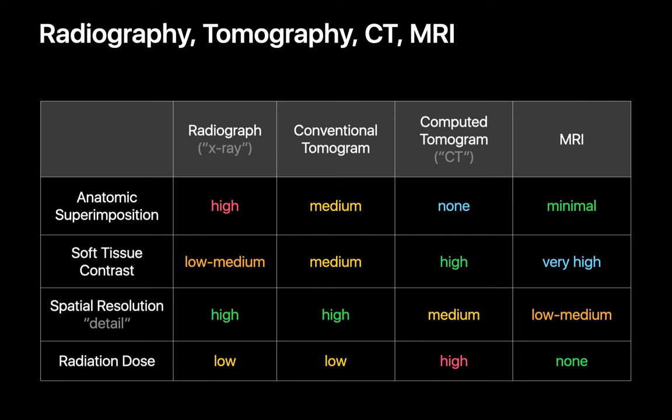When it comes to imaging any body part in radiology, four common options usually include standard x-ray, conventional tomography, CT, and MRI. Each modality has different advantages and disadvantages. While CT offers much better soft tissue contrast and much less anatomic superimposition compared to x-rays and conventional tomography, its spatial resolution is poorer and the amount of ionizing radiation exposure required to make an image is much, much higher. MRI offers minimal anatomic superimposition, outstanding soft tissue contrast, and no ionizing radiation. However, its spatial resolution is even poorer than CT. Although modalities like x-ray and conventional tomography may not provide outstanding soft tissue contrast, they can offer excellent spatial resolution and require pretty low amounts of ionizing radiation.